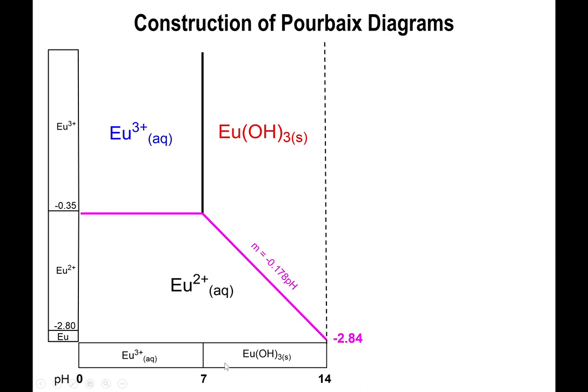If you actually place the species into the corresponding regions, what this tells you is that in the upper left portion of the graph, that's where Eu3+(aq) will exist. In the upper portion but the right portion past pH 7, that's where Eu(OH)3 will exist. Below the pink boundaries, that's where Eu2+ exists.